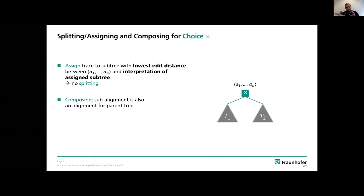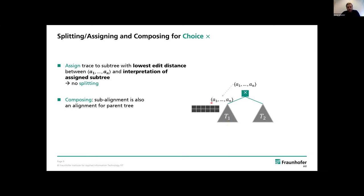Given this gray-box view on a subtree, how does the splitting work? We start with the choice operator, the simplest: it means we either execute T1 or T2, so we assign the whole trace to one subtree. We do so by calculating the lowest edit distance — the edit distance from this trace to the closest trace in the interpretation of T1, versus T2. The lowest edit distance wins. Then the resulting alignment for that subtree is also a valid alignment for the whole tree.